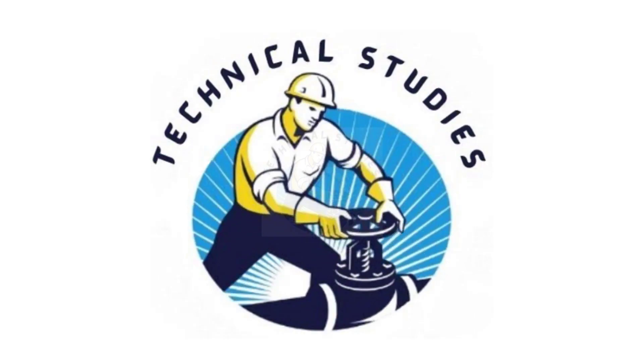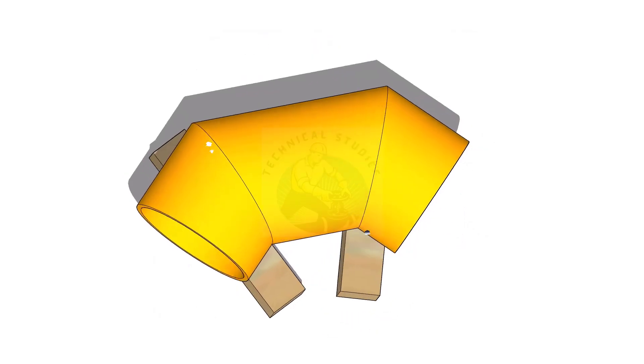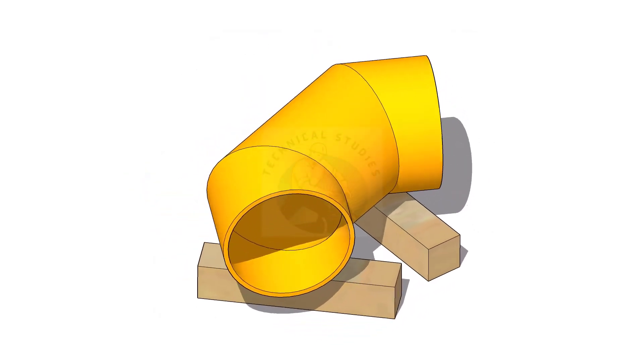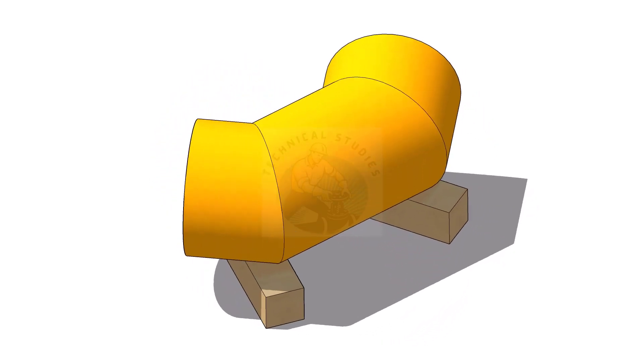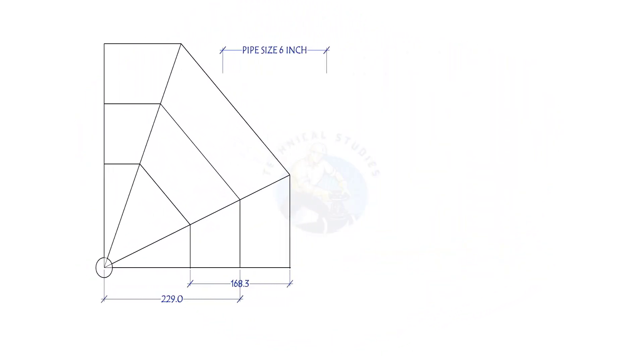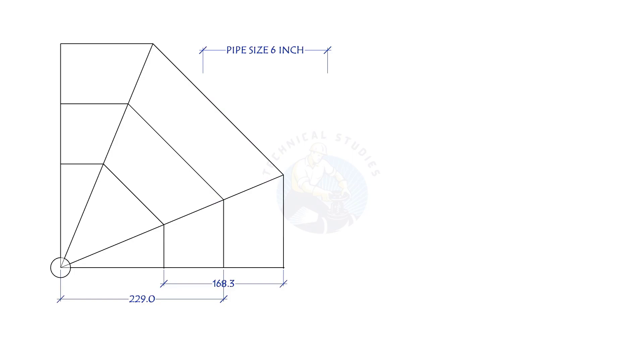Welcome to Technical Studies. In this video, we will learn how to calculate and mark a 2-cut 90-degree mitre bend. After watching this video, you will be able to calculate the cutback and the centerpiece length in an easy calculation method.